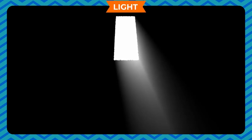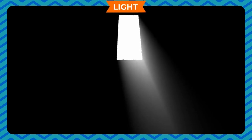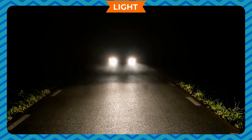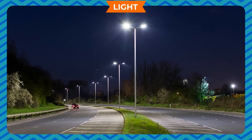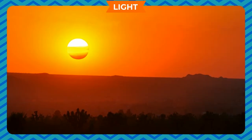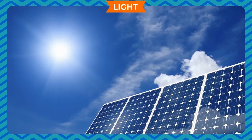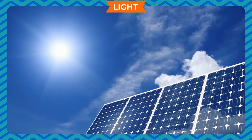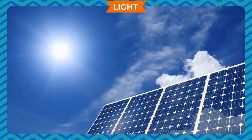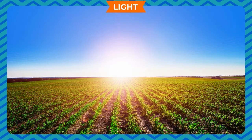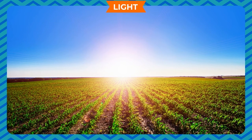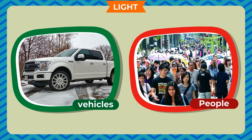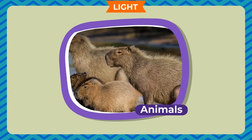Light is a kind of energy which gives us the sensation of sight, or the ability to see the objects around us. The sun, the largest source of energy on the earth, is also the largest source of light on the earth. In the daytime, we see most of the objects such as vehicles, people, animals, etc.